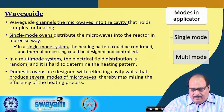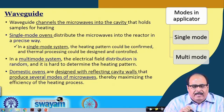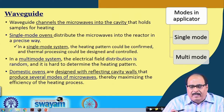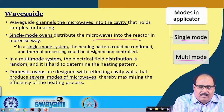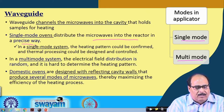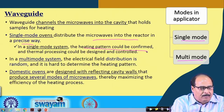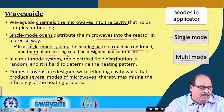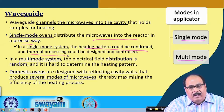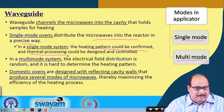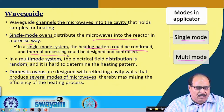The wave guide channels the microwave into the cavity that holds the sample for heating. There are several modes of wave guide applicator: single mode and multi mode. Single mode ovens distribute the microwave into the reactor in a precise way, and the heating pattern can be confirmed and thermal processing designed and controlled. In a multi-mode system, the electrical distribution is random and it is hard to determine heating patterns. Domestic ovens are generally designed with reflecting cavity walls that produce several modes of microwaves, maximizing heating efficiency.